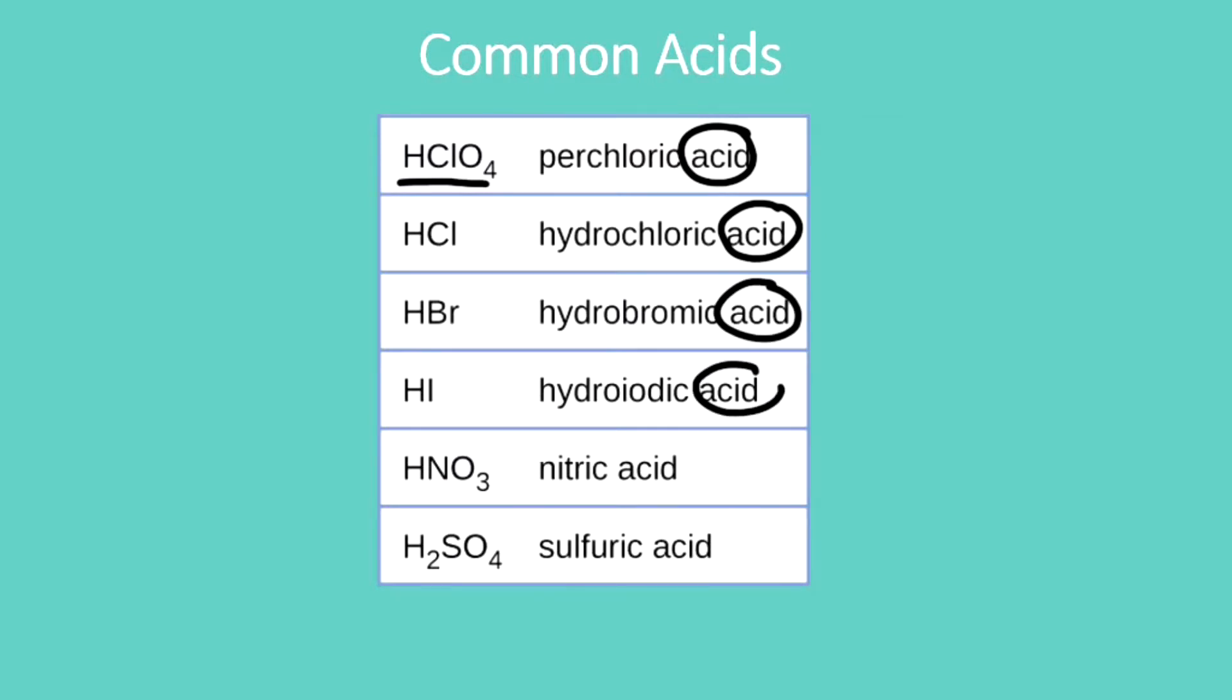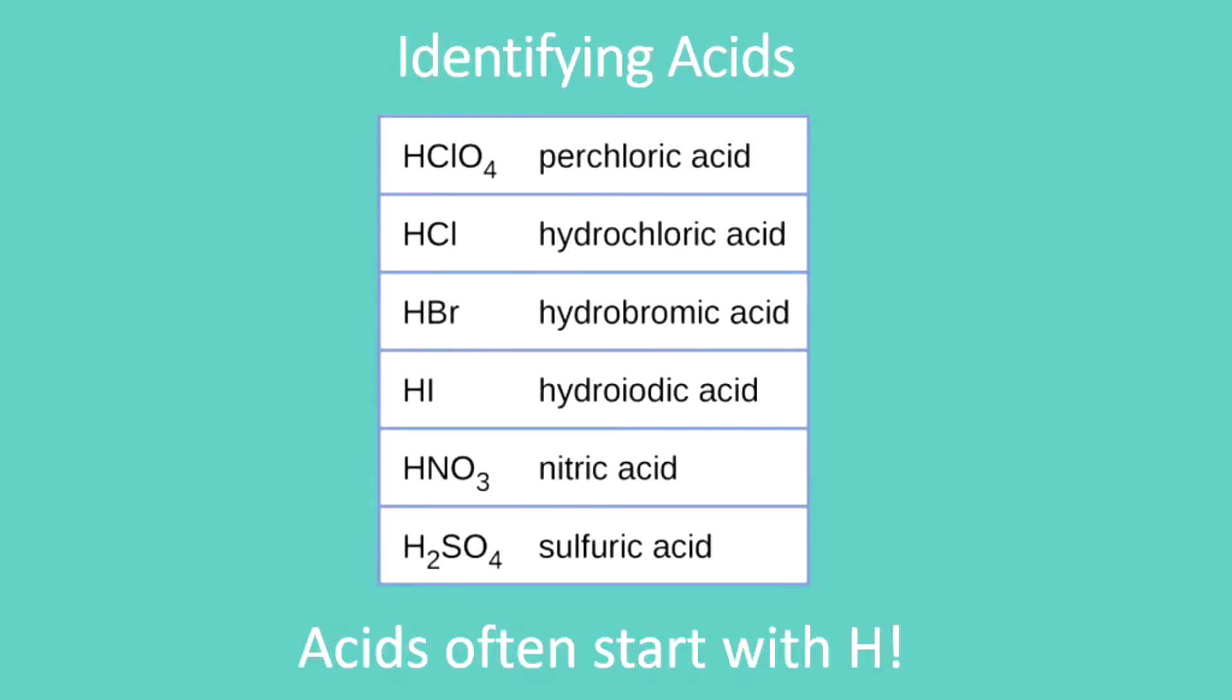On the other hand, it can be a little more challenging if you just have the formula. So say you're just given HCl, how would you know that was an acid? The trick here is that, as you'll notice on this list, all of our acids here start with H and that's usually the case. So acids often start with H.